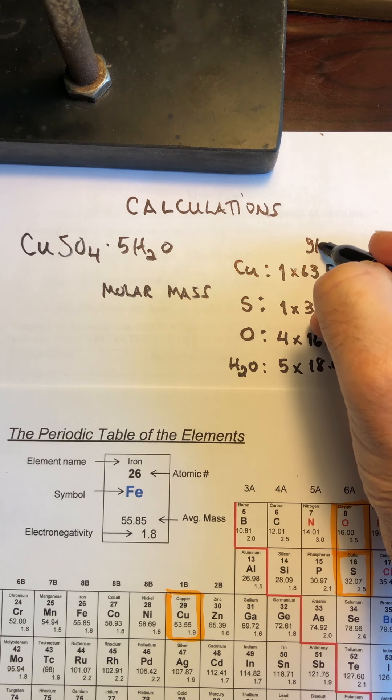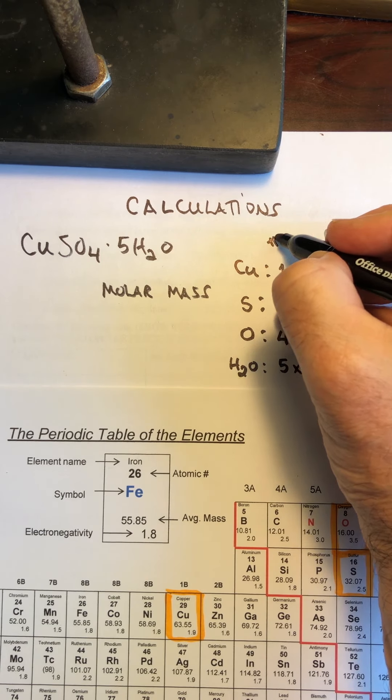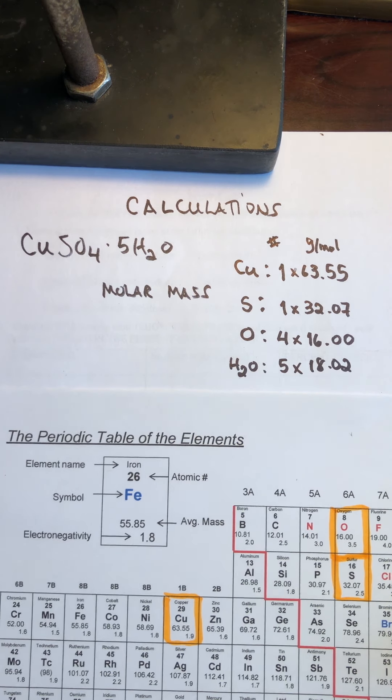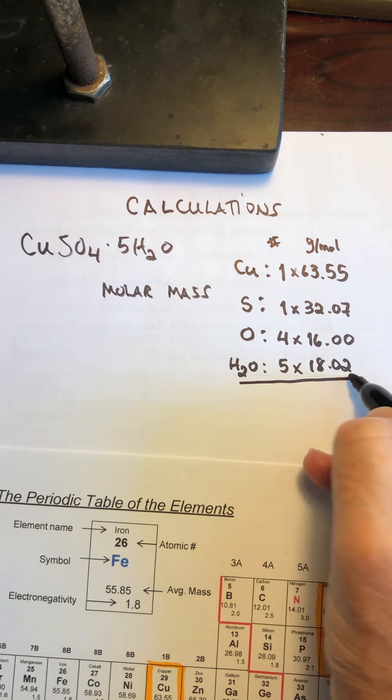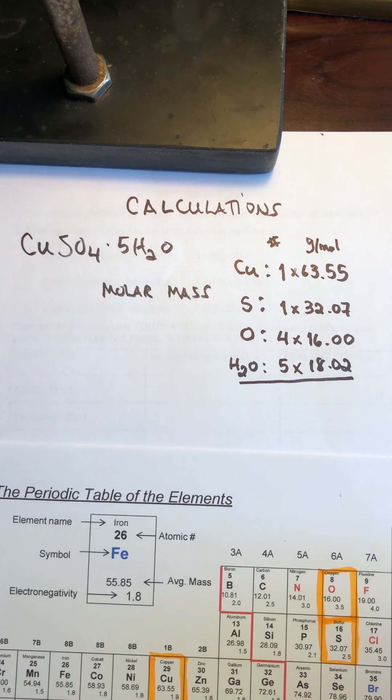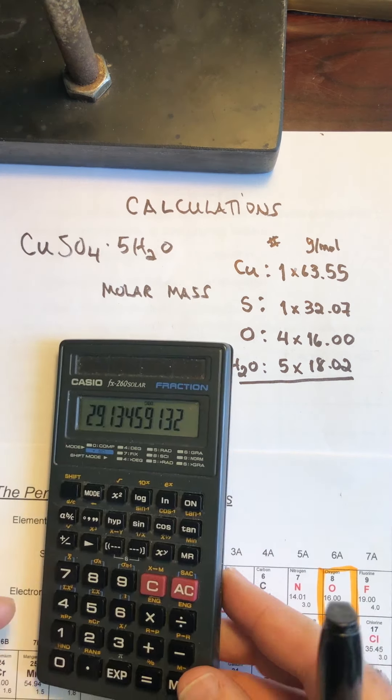So this is here the grams per mole, and this is the number of moles of each one. So we're going to calculate that out.